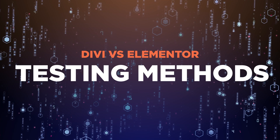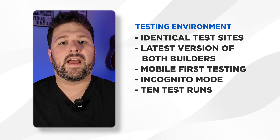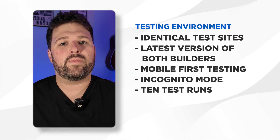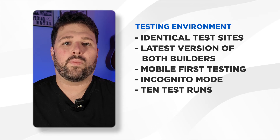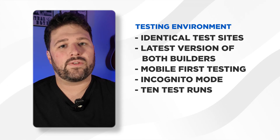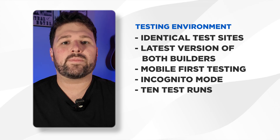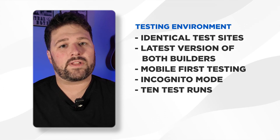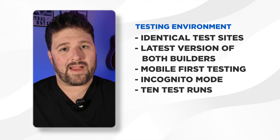Before we dive into the results, let me show you exactly how we tested these page builders. To make this comparison fair and useful, we needed to create identical testing conditions. Did you know that the testing environment can significantly impact performance results? That's why we set up identical test sites using the 2023 theme, the latest versions of both builders — Elementor Pro 3.21.1 and Divi 4.24.2 — mobile-first testing from servers in Paris, incognito mode for clean results, and 10 test runs for accurate averages.